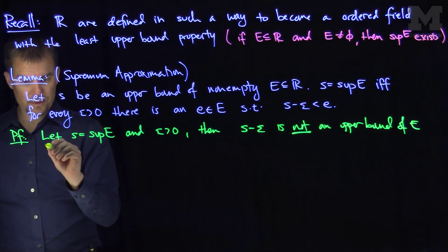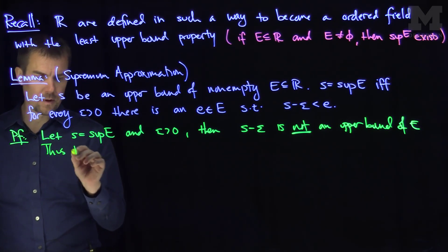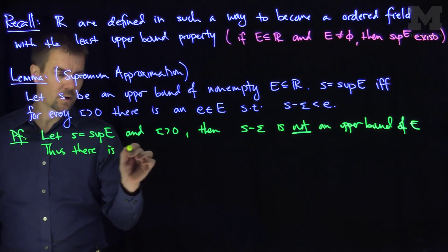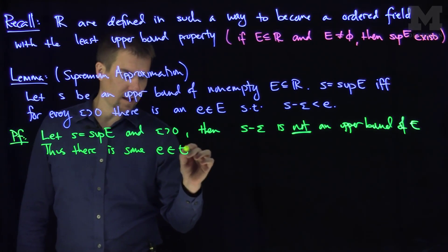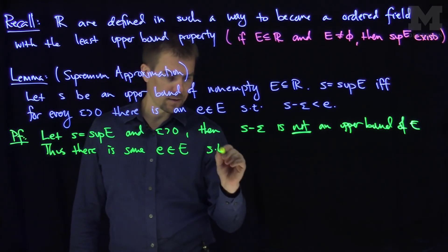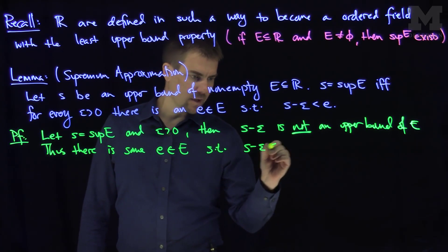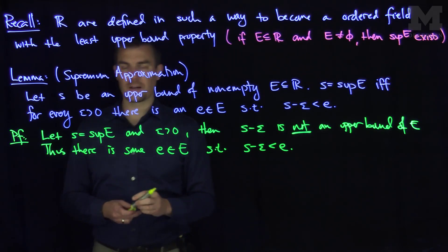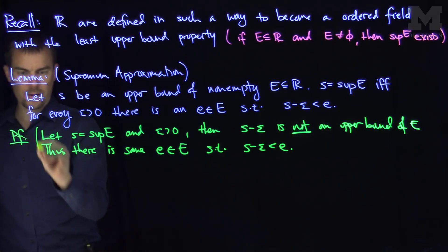What does this mean? Therefore, there is some little e in E such that S minus epsilon is less than e. That's by the definition of the supremum, so that's the first direction.